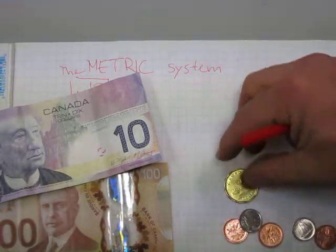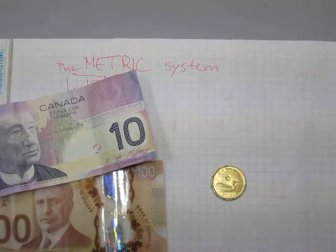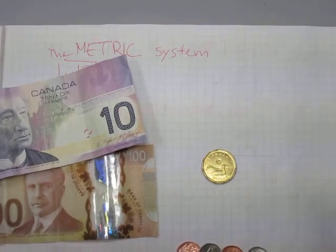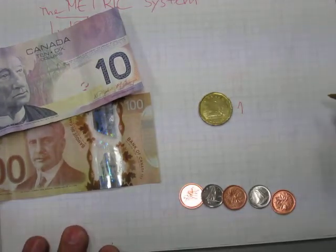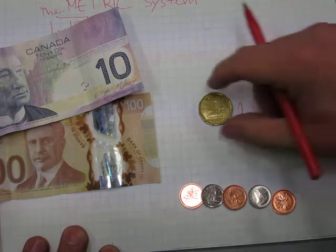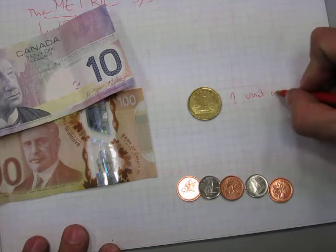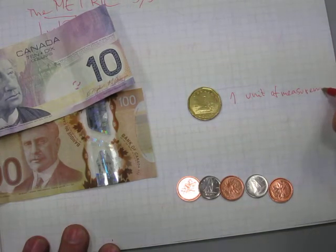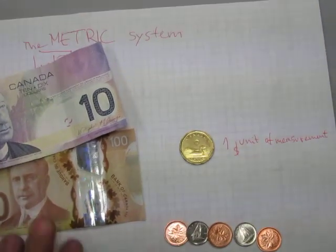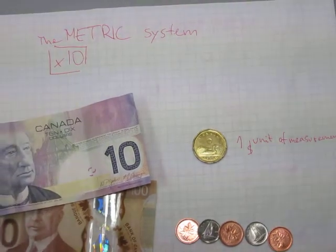Here is a loonie — this is a $1 coin. The $1 coin is the unit, the basic unit of measurement. So the unit of one here is a dollar, and this is our unit of measurement.